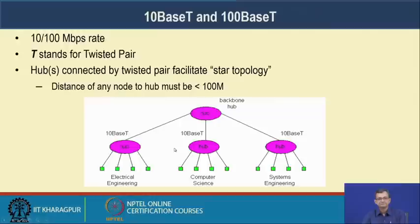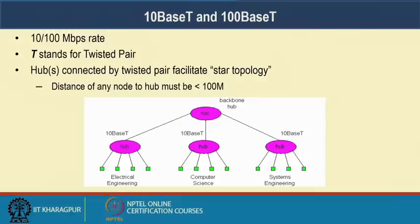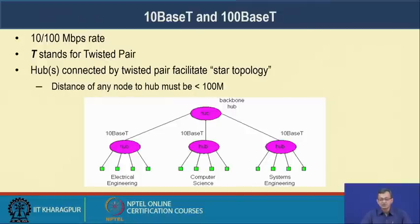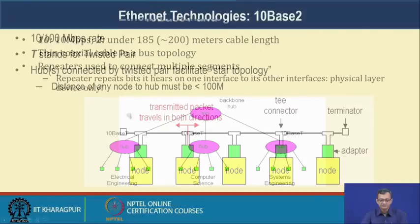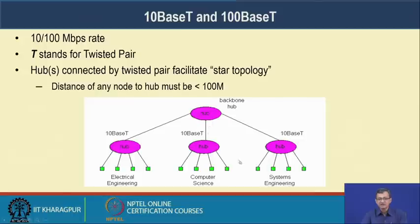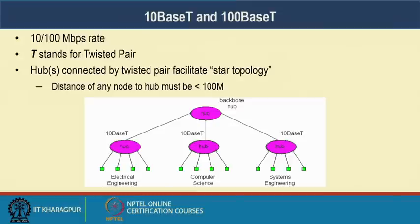Later, 10BaseT and 100BaseT used twisted pair cabling at 10 or 100 Mbps. Hubs connected by twisted pair enable a star topology. The typical maximum length for twisted pair is around 80-100 meters. Despite the star topology, hub-connected networks still share collision and broadcast domains, so effective bandwidth still decreases. Here '10' stands for Mbps, 'Base' for baseband signaling, and 'T' for twisted pair.